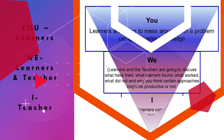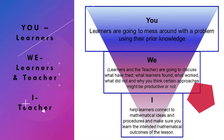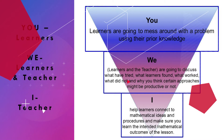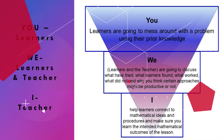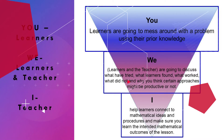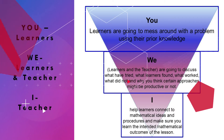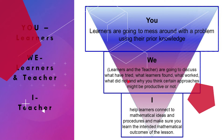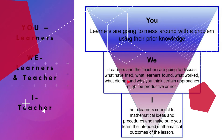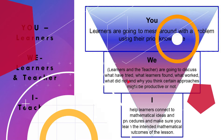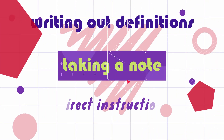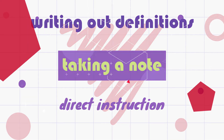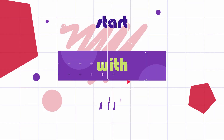Lastly, in I, the teacher will help learners connect to mathematical ideas and procedures and make sure learners learn the intended mathematical outcomes of the lesson. Instead of starting with experiences where students accumulate knowledge through writing out definitions, taking notes, or direct instruction, an upside-down approach aims to start with student ideas.